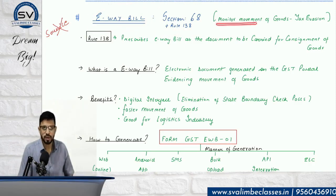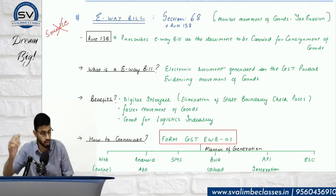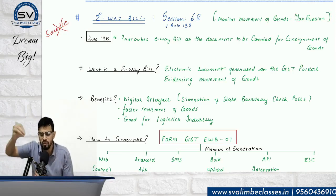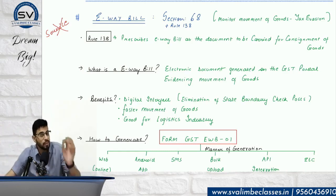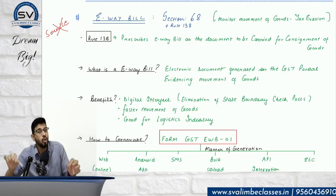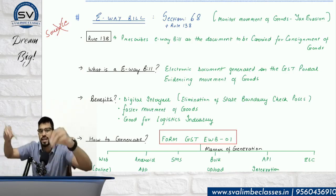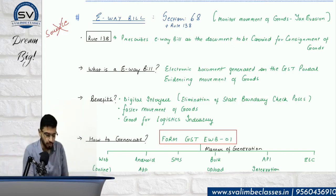The purpose of e-way bill is to monitor the movement of goods and to avoid tax evasion. The government wants to prevent tax evasion because when movement of goods happens — we will study the cases — there is a threshold of consignment value. In that case you need to generate an e-way bill, meaning you inform the government before the movement happens about the value of goods moving.